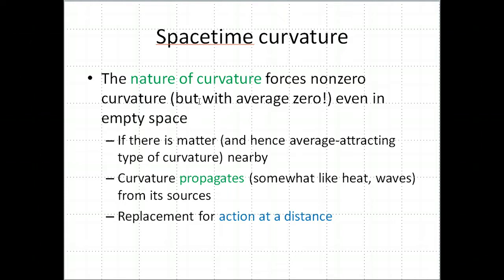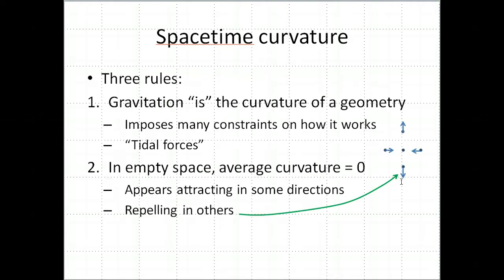Remember, the average curvature has to be zero, but there is an effect. There are these arrows, they're not all just nothing. There are these effects, it's just that they have to average out to be nothing, by having some be attracting and some be repelling.